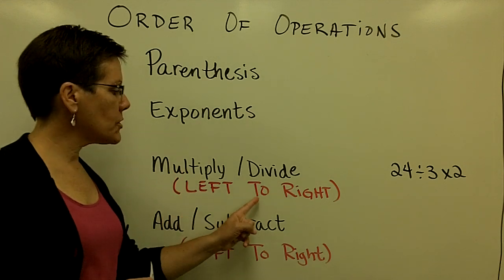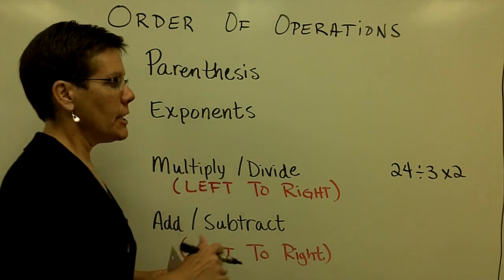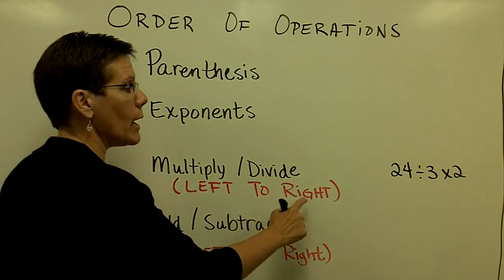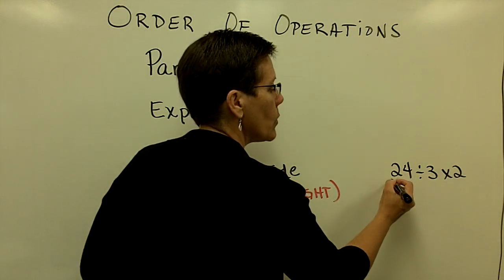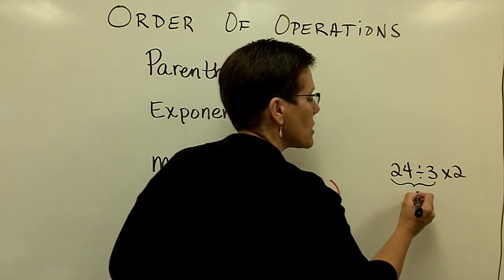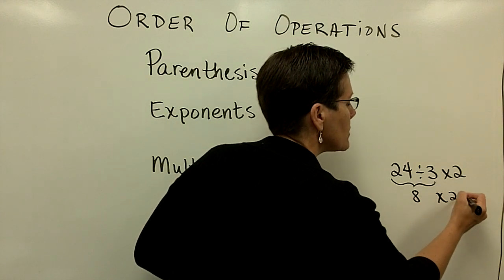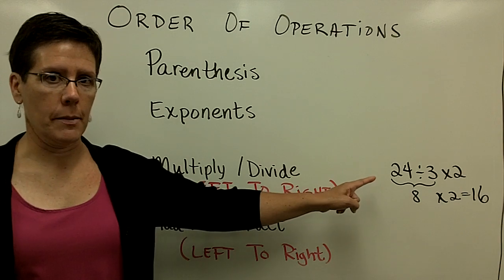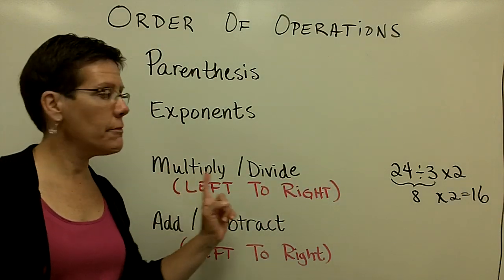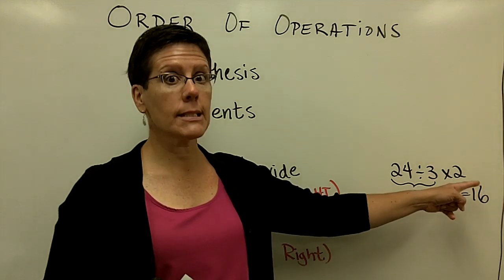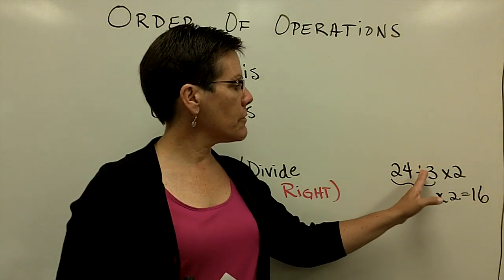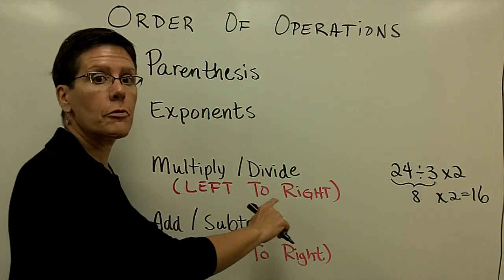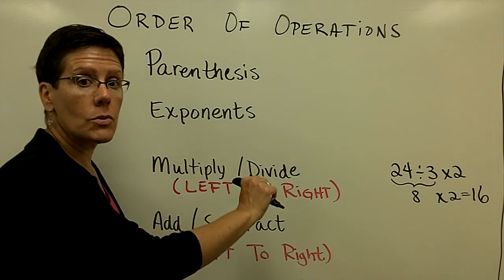We would work from left to right in the math sentence, and if division came first in the problem, we would do that first because we're working from left to right. So in this problem, it is required that we take 24 divided by 3 first and get 8, and then multiply by 2 to get a value of 16. If we did not work from left to right, if we thought we were supposed to multiply first by taking 3 times 2 and getting 6, then 24 divided by 6 gives us an incorrect answer of 4. It is very important to work from left to right when completing something using order of operations.